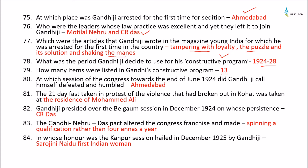Gandhiji called himself defeated and humbled at the Congress session held in June 1924, due to violence that had broken out in Kohat — a Hindu-Muslim riot. He undertook a 21-day fast at the residence of Muhammad Ali. Gandhiji presided over the Belgaum session in December 1924 on the insistence of C.R. Das. The Gandhi-Nehru-Das pact altered the Congress franchise, making spinning the wheel a qualification for membership rather than payment of four anas a year.